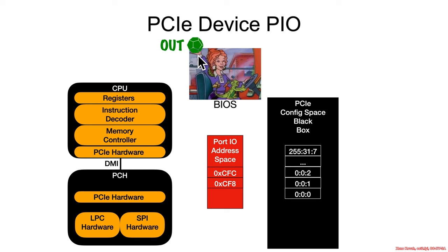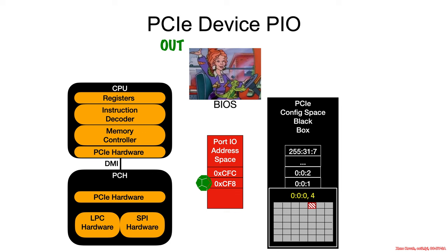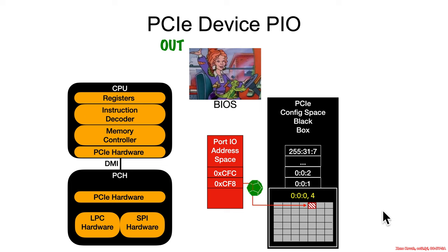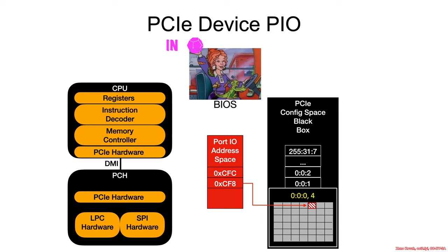Let's imagine someone is using an out assembly instruction, outing to CF8. That's going to select some particular address inside of the config address space — for instance, bus, device, function 0, 0, 0, offset 4. Then if another out assembly instruction is targeted at CFC, that's going to write data specifically to whatever bus, device, function, offset was selected by the write to CF8, writing the data into the register stored behind the scenes. Likewise, an in instruction, after CF8 is properly configured, allows reading in the data via an in of CFC from that particular offset, giving back the data stored in that register.